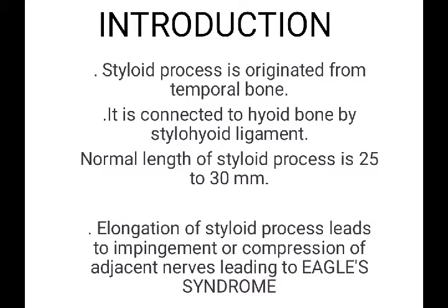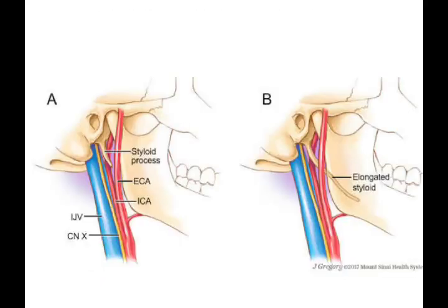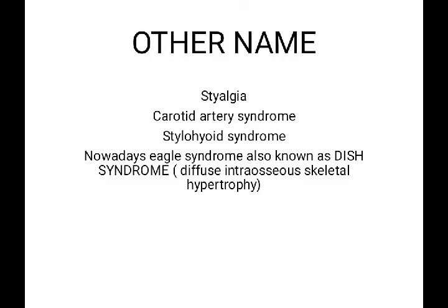In this diagram, diagram A represents the normal styloid process, and in diagram B you can see the elongated styloid process. Other names for Eagle syndrome include styalgia, carotid artery syndrome, and stylohyoid syndrome. Nowadays, Eagle syndrome is also known as diffuse idiopathic skeletal hypertrophy.